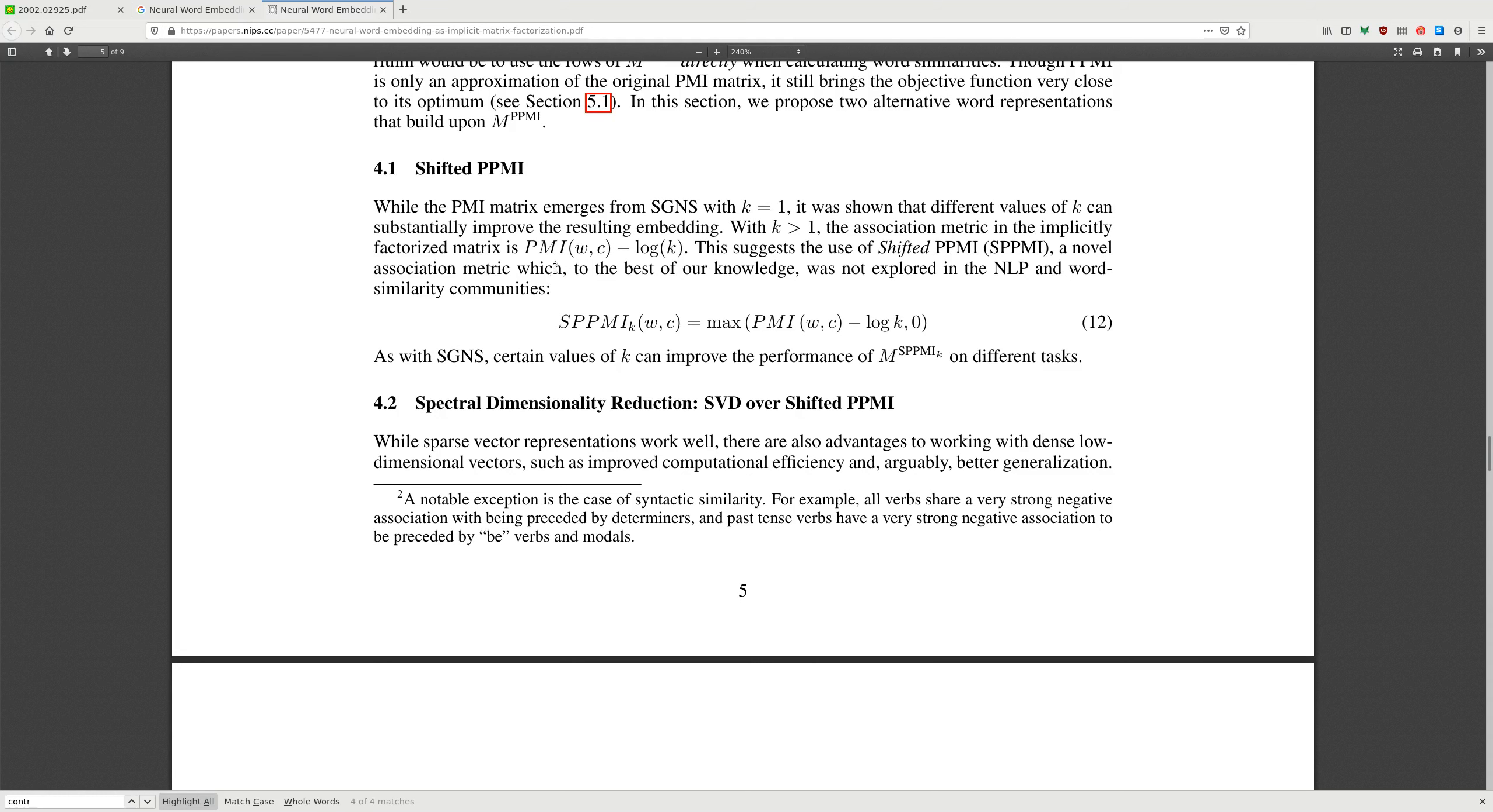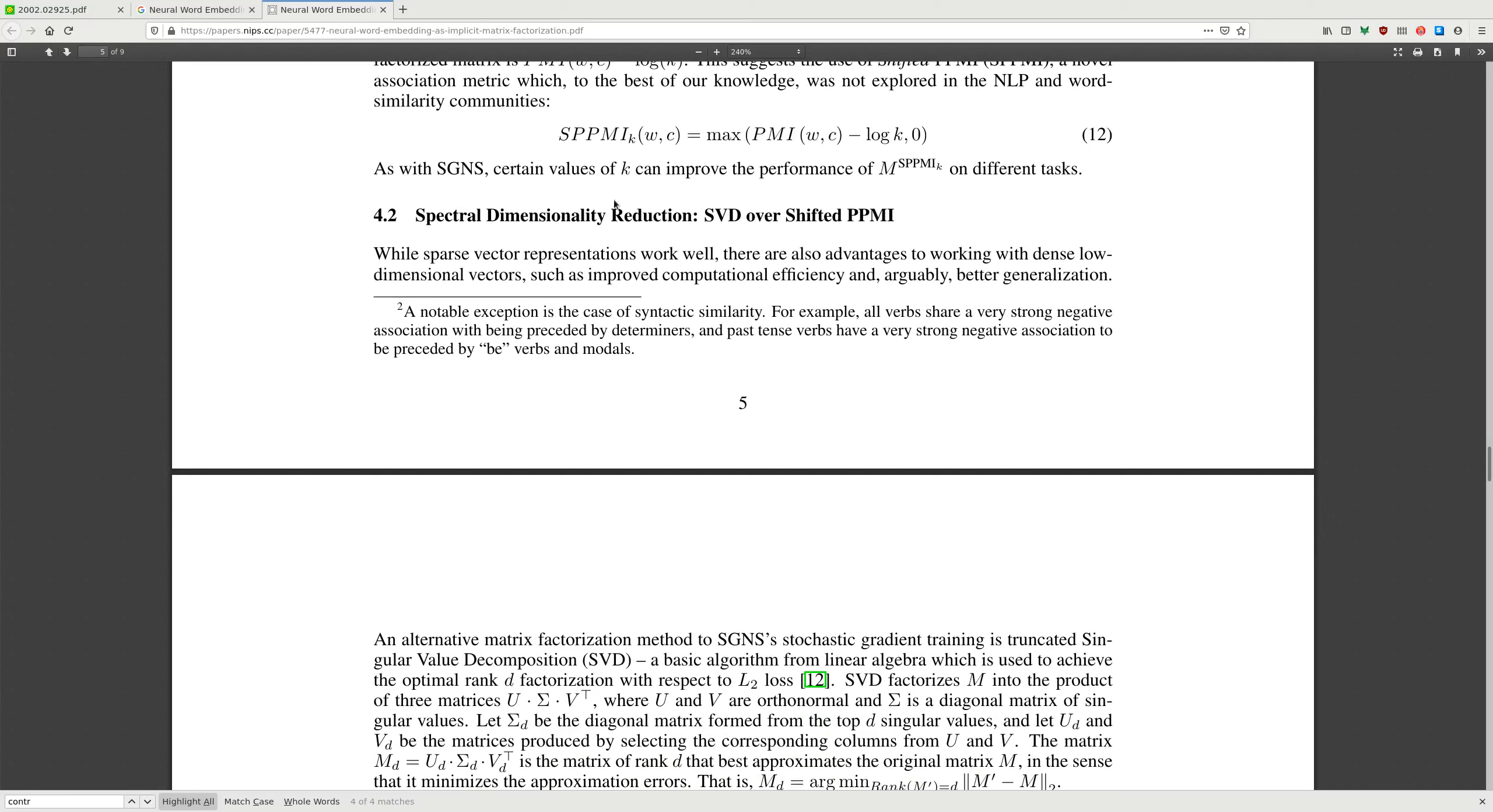Shifted PPMI. While PMI matrix emerges from SGNS with k equals 1, it's shown that different values of k can substantially improve the resulting embeddings. With k bigger than 1, the association metric is implicitly PMI minus log k. This suggests the use of shifted PPMI, SPPMI, a novel association metric which to the best of our knowledge was not explored in NLP word similarity communities. Shifted PPMI is max of PMI minus log k and zero.